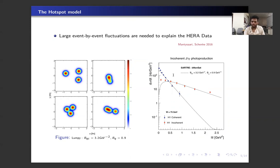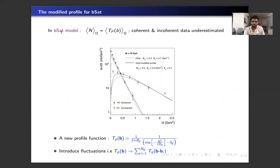I have done it here with the b-nonsat model, and we see that the model explains both the coherent and the incoherent data very well. Now for the b-sat case we see that the model underestimates the coherent and the incoherent data. This is due to the fact that when we do the averaging, the b-dependence is non-linear, so we have introduced a new profile function which retains the first and the second moment of the amplitude. These are the parameter values; for further work we will use the modified profile function for the b-sat case.